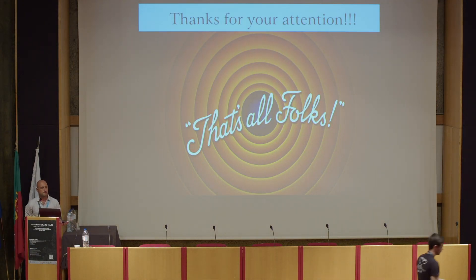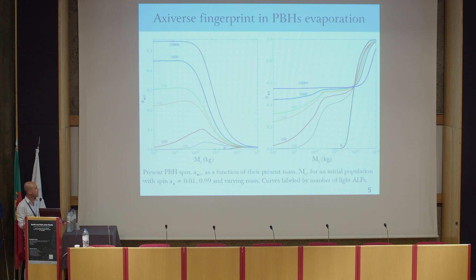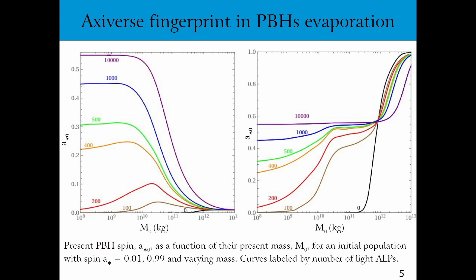Question: On the plot with the spin parameter versus mass, could you comment on what the different colors mean? Each color corresponds to a different number of axion-like particles, or in general light scalars, added to the standard model of particle physics. For example, this little jump corresponds to the pions entering in the evolution of the black hole. The numbers are just the number of additional scalar particles taken into account in the evaporation sample, included since the beginning because 10 to the 12 kilograms corresponds to a temperature of roughly some mega-electron volts, so we take into account light particles lighter than this scale.